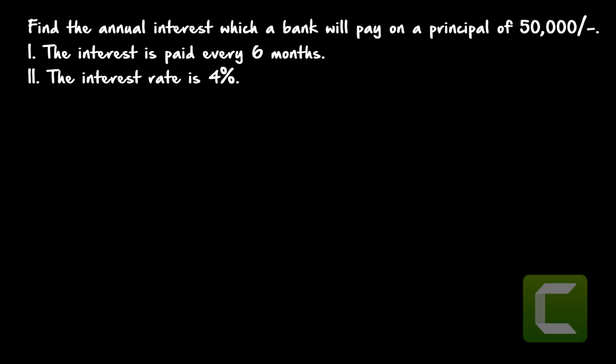We have to find out the annual interest which a bank will pay on a principal of fifty thousand. Since compound interest is not specifically mentioned, we can assume it is simple interest. We are asked to find simple interest annually for one year; principal is given as fifty thousand. The formula for simple interest is SI = P × N × R / 100.